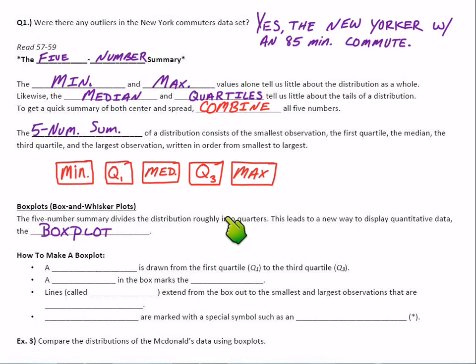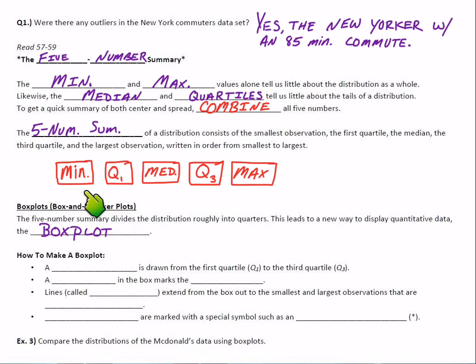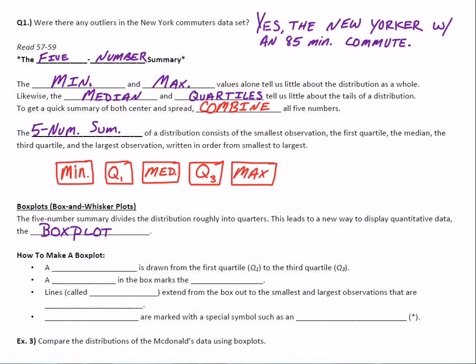This leads to a new way to display quantitative data. You can think about it as being 25% of the data, 25%, 25%, 25% — so we can look at that data in quarters.